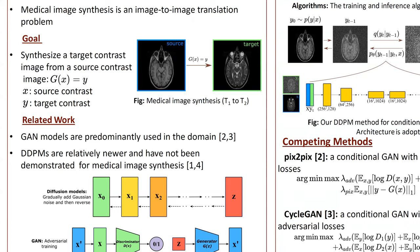GAN models are predominantly used in the domain, and actually Pix2Pix and CycleGAN models are well investigated for these tasks. On the other hand, DDPM models are newer and have not been demonstrated for medical imaging yet. In fact, conditional versions of the DDPM models are also varied in the computer vision domain.